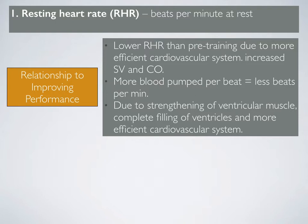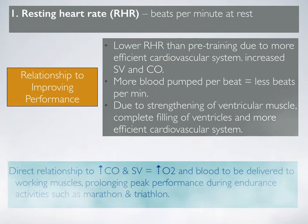The heart can therefore pump more blood out in one minute, which refers to cardiac output. So this leads to less beats per minute, and that's why resting heart rate decreases as a result of training. This direct relationship allows more oxygen to be delivered to working muscles, and it prolongs peak performance during endurance activities such as marathon and triathlon.